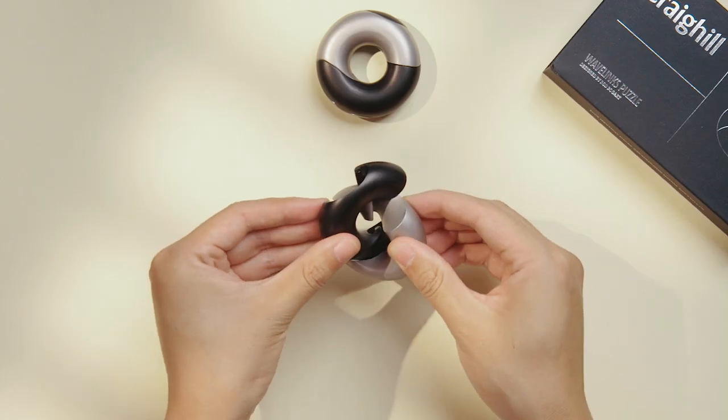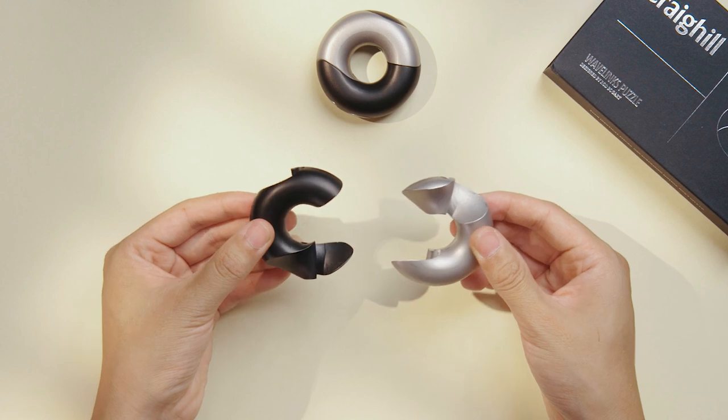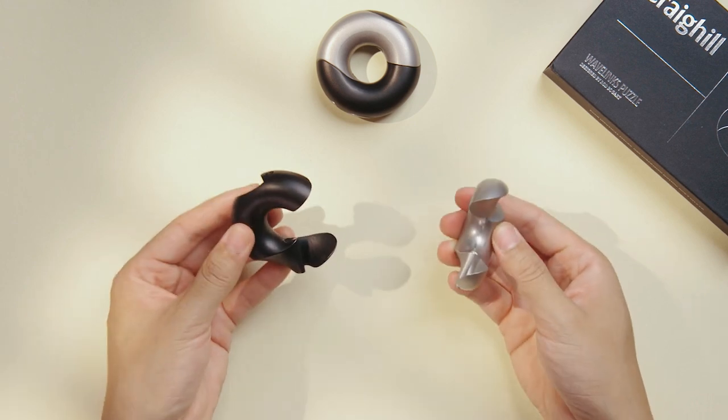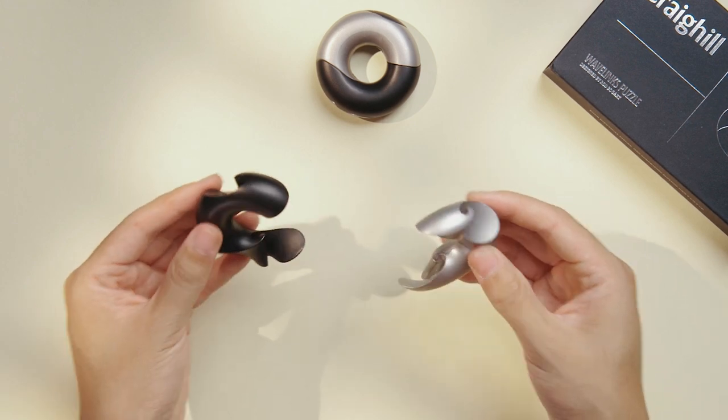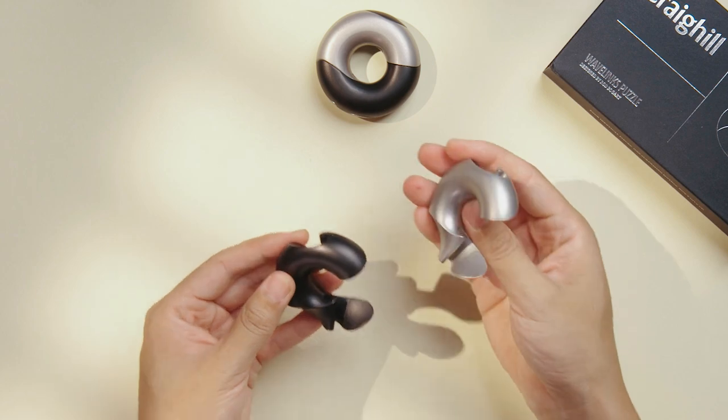If you rotate it more, the pieces will come apart. Trying to put it back together into the donut shape is good practice for later on, as you'll begin to understand how the four pieces rotate into each other.